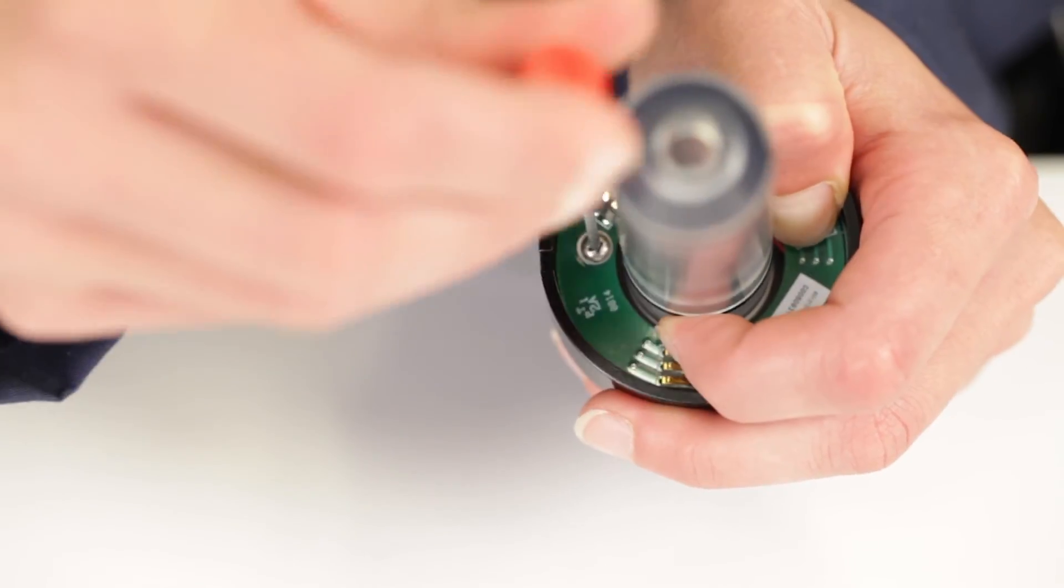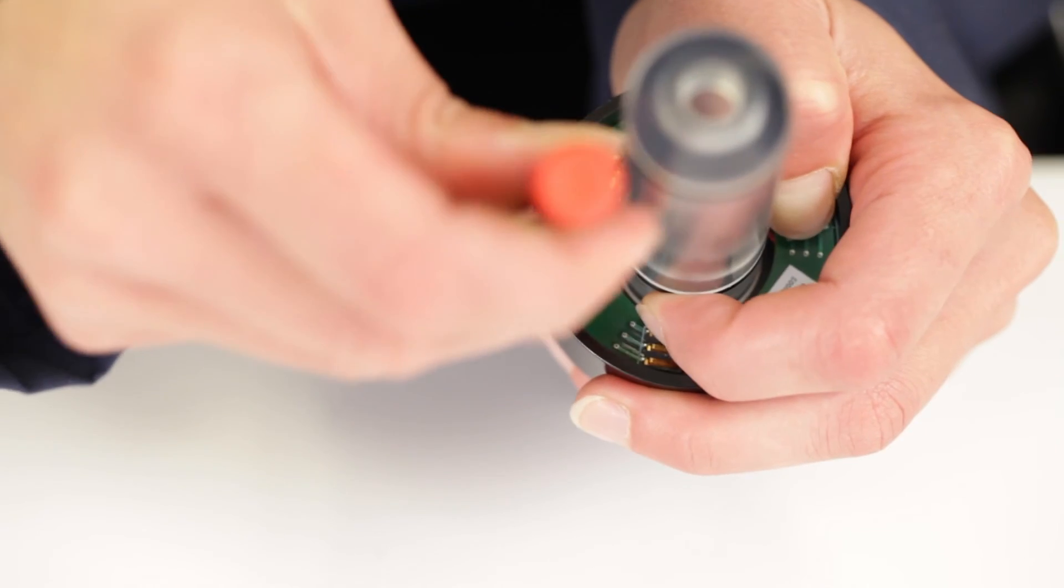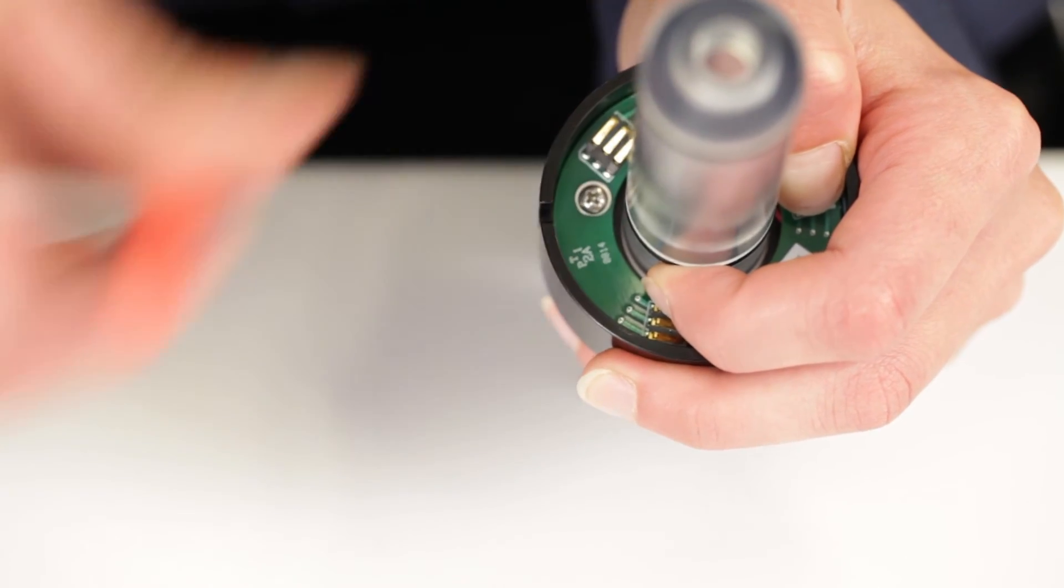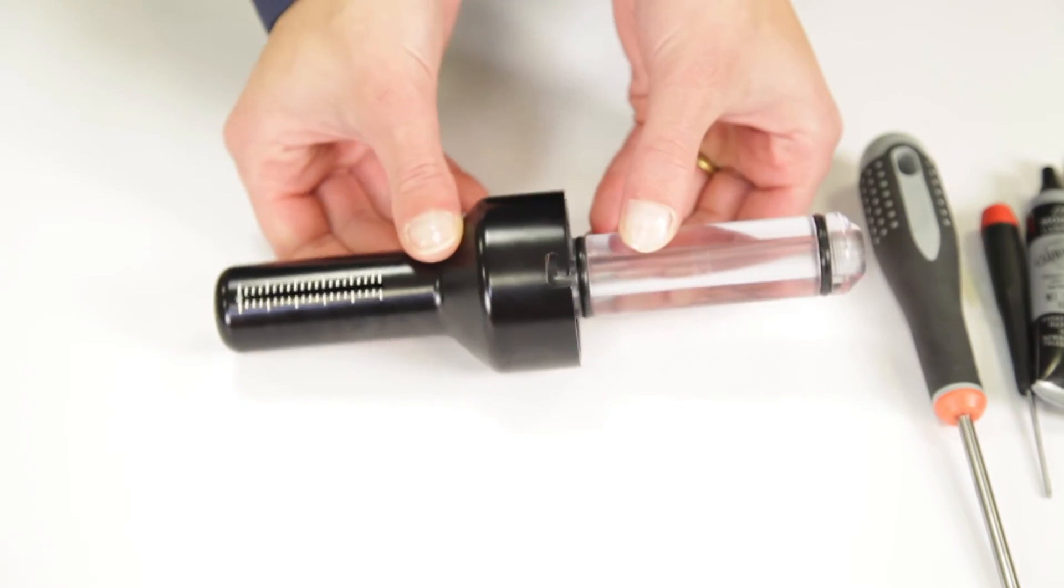Once the burette is reassembled, check to make sure the wires are not showing and that they're folded beneath the upper plate. Now the burette handle is ready to use.